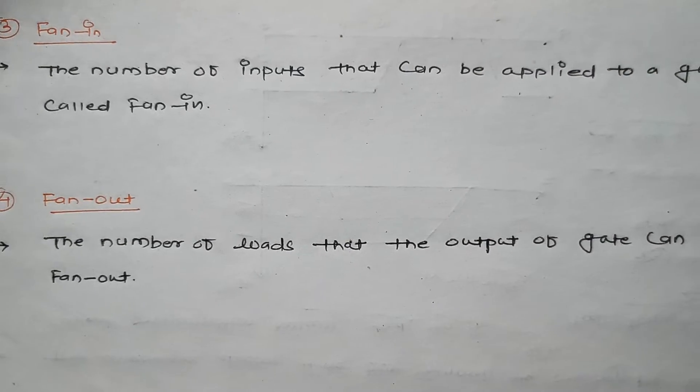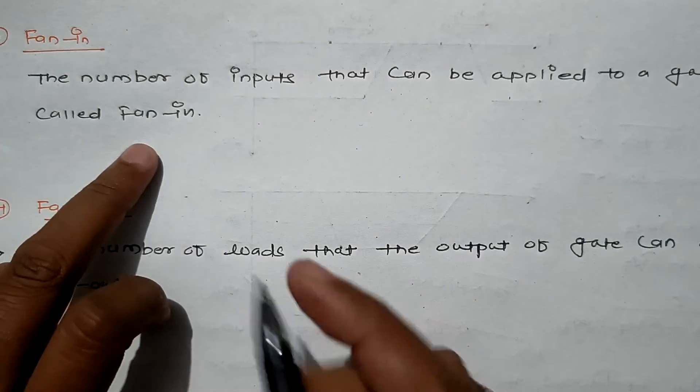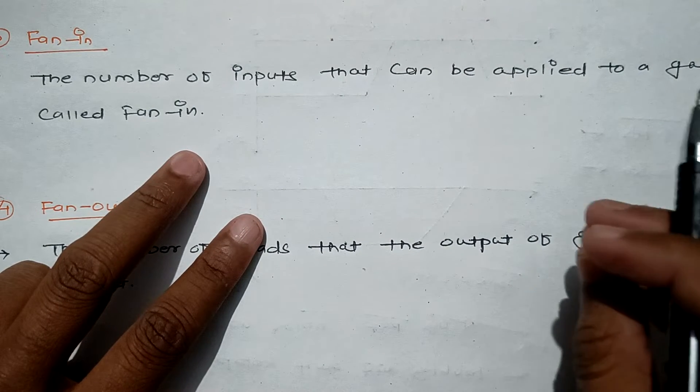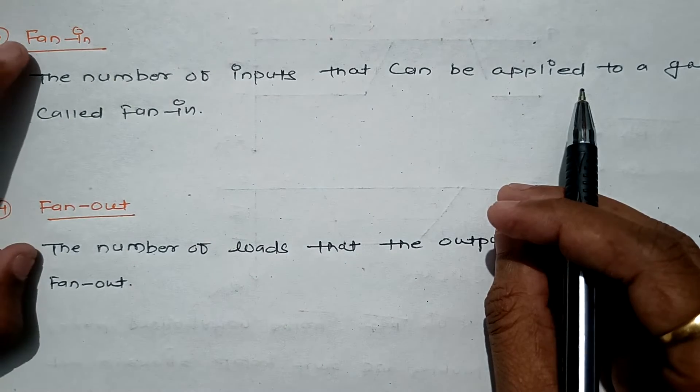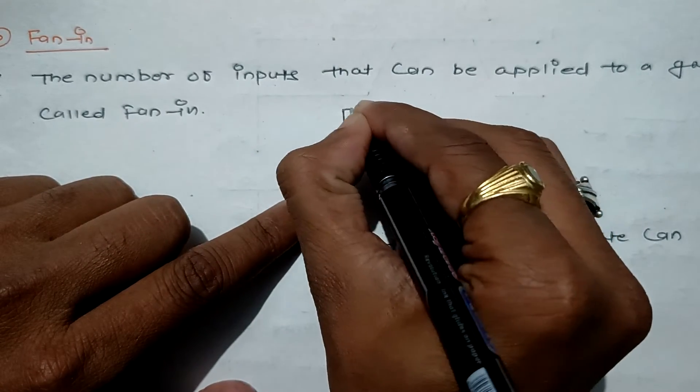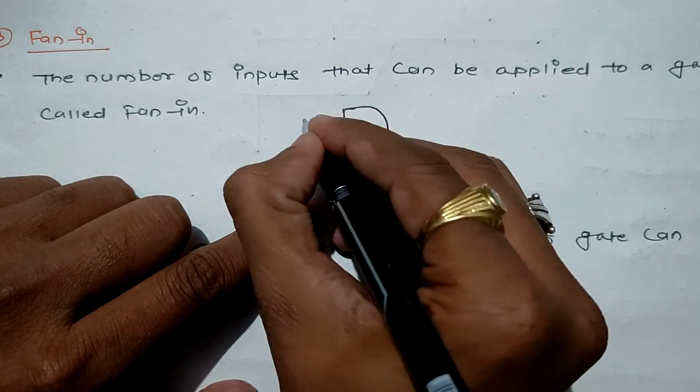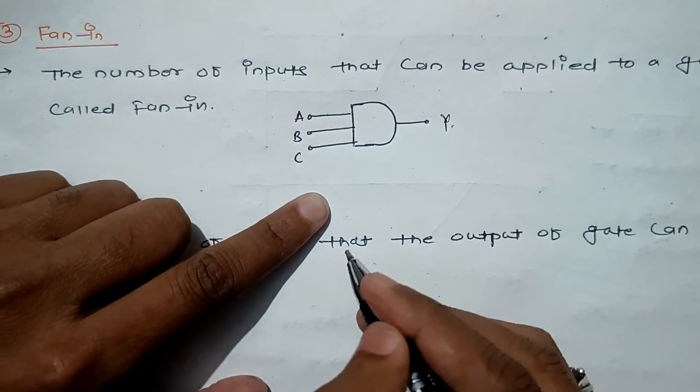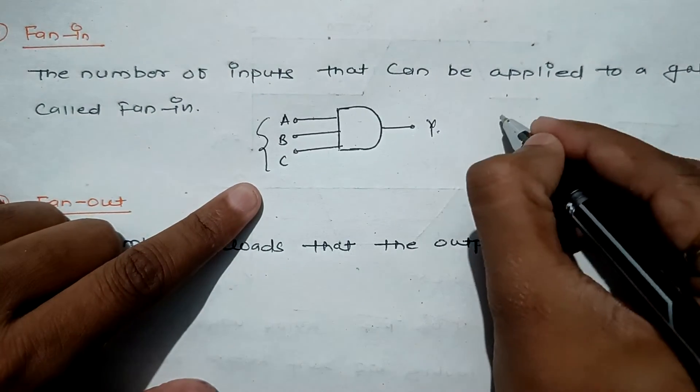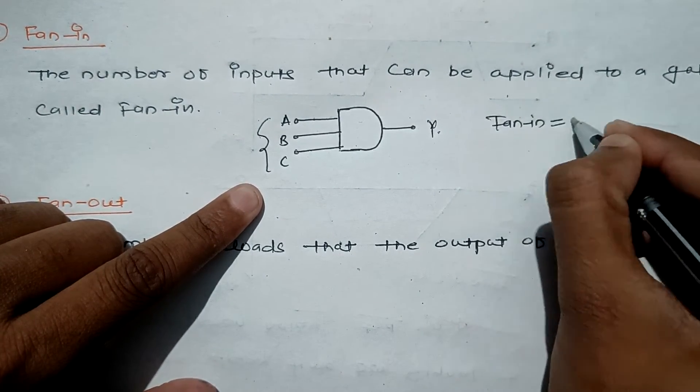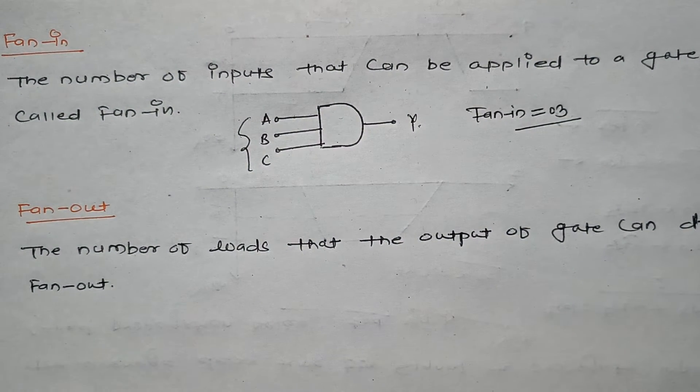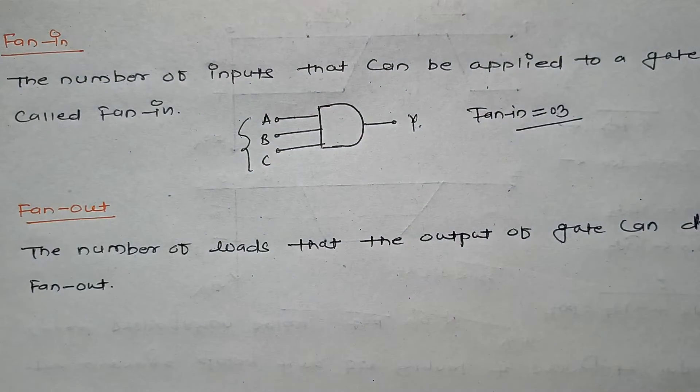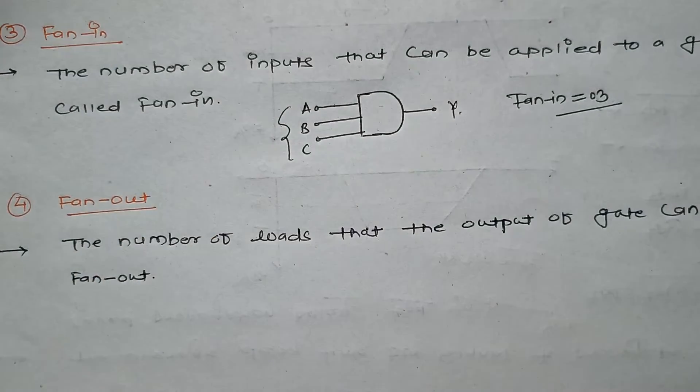The next characteristic is fan-in. How can you define it? The number of inputs that can be applied to a gate is called fan-in. For example, let's suppose I have an AND gate to which we are connecting three inputs and this is our output. So the fan-in of this gate will be three, meaning it can satisfactorily handle three inputs.